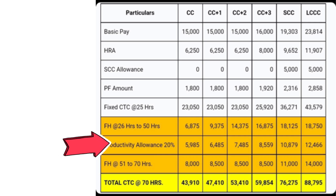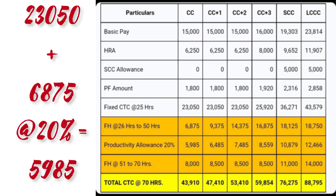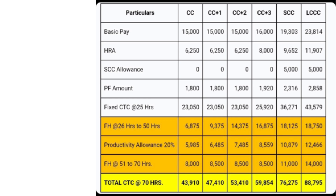Productivity allowance is 20% of your base amount, and it is conditional on your sick leaves. Every company has its own productivity allowance policy — it could relate to sick leaves or warning letters. The basic rule is if you have not taken any sick leave, or your sick leave does not exceed one or two days in a month, you will receive this productivity allowance. If you have more sick leaves than that, this allowance will not be part of your salary.